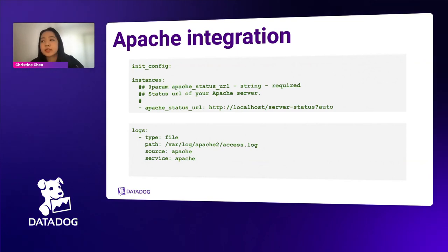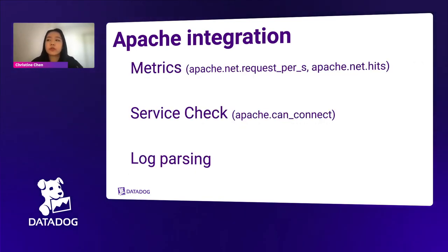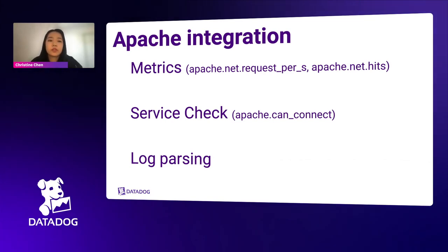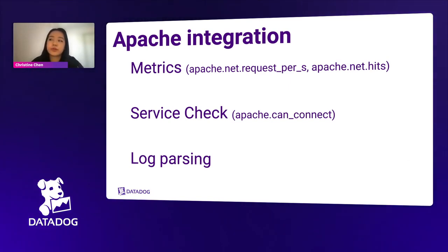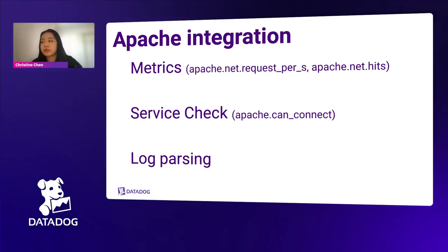From the Apache integration, we can get metrics like network traffic — for example, metrics called Apache net request per second or net hits. The integration also has a service check called 'Apache can connect,' which informs you whether the integration was able to successfully connect to the monitoring endpoint. Logs parsing is how Datadog extracts information from your log lines into facets and attributes that can be easily searched and filtered.